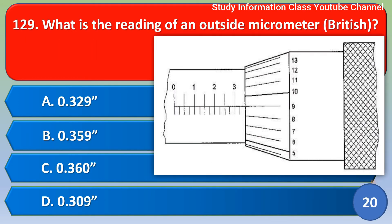Next question: What is the reading of an outside micrometer shown? Four options are given. The correct answer is Option B — 0.359.